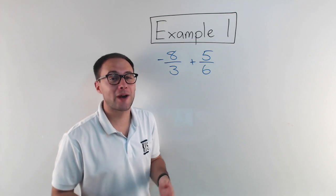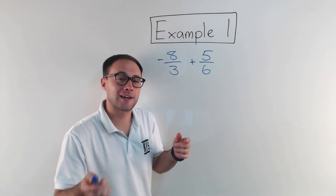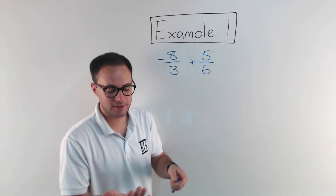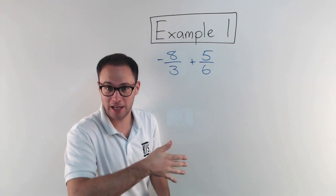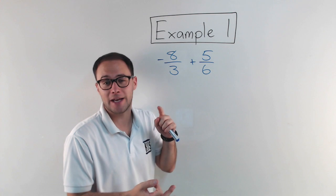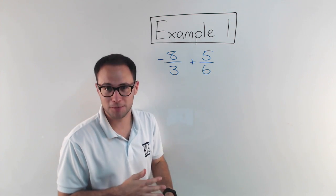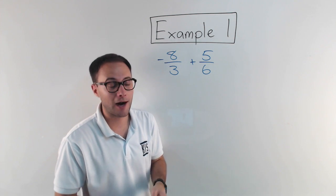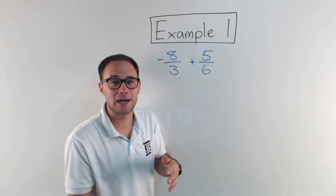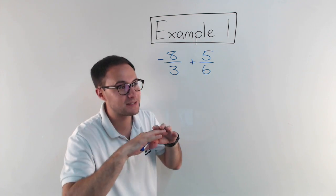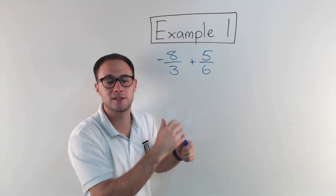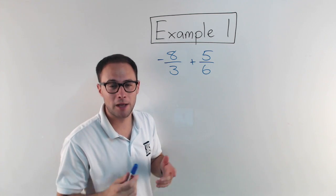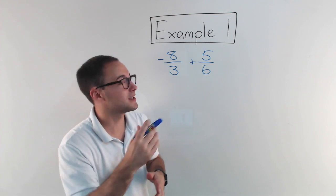So today we're adding rational numbers. As we talked in the last video, rational numbers includes all whole numbers, all integers, so we're talking about negative numbers as well, and fractions. Decimals, terminating and repeating decimals, mixed numbers, both negative and positive of those. So we're talking about basically a lot of different types of numbers. We're going to do some with fractions, some with decimals, and maybe even a few with mixed numbers. Let's get started.